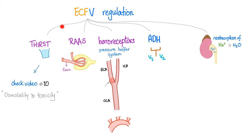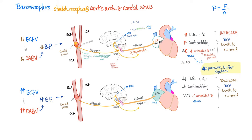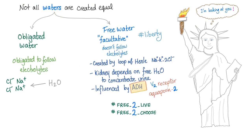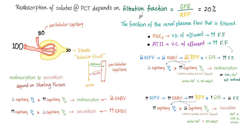To regulate the extracellular fluid volume, we depend on five mechanisms. We discussed the baroreceptor response: less effective arterial blood volume triggers a sympathetic response; increased effective arterial blood volume triggers a parasympathetic response. ADH acts on the collecting tubules via V2 receptors and aquaporin-2 channels, acting on free water. We discussed reabsorption at the proximal convoluted tubule and the filtration fraction in the previous video.